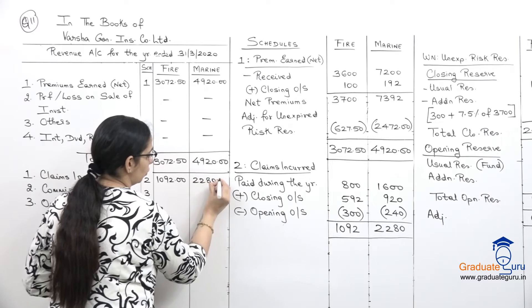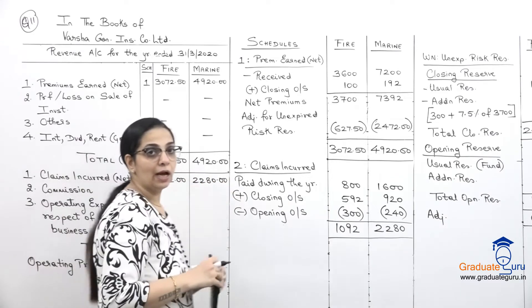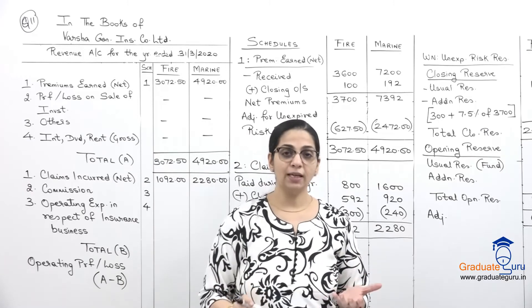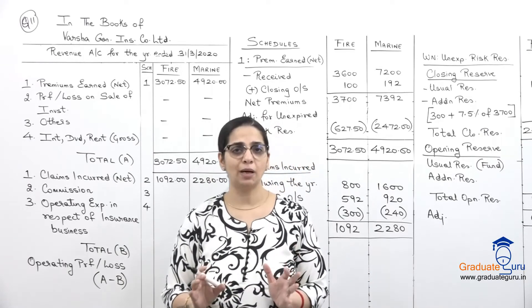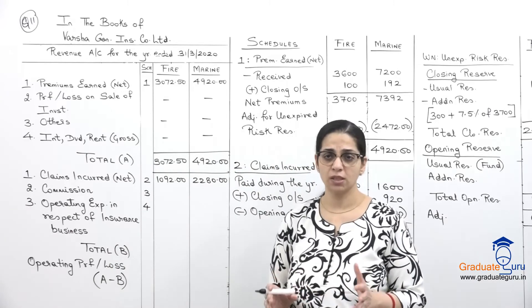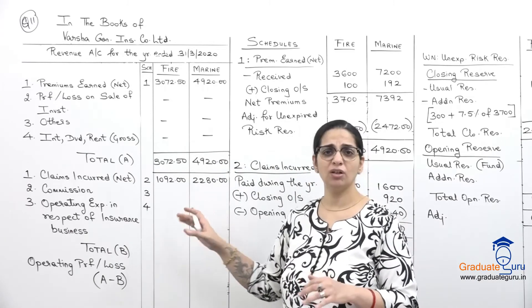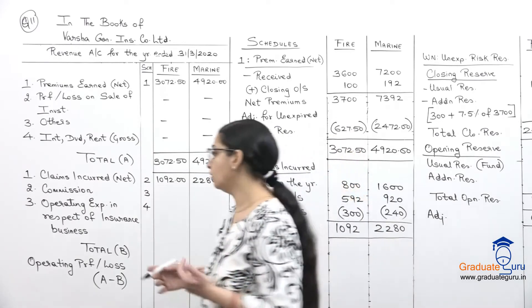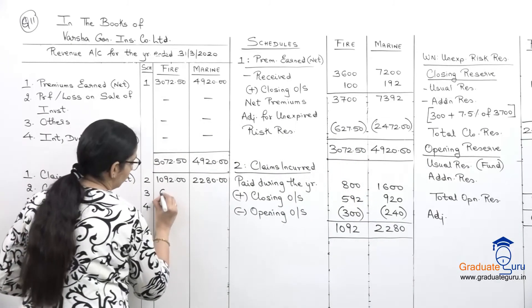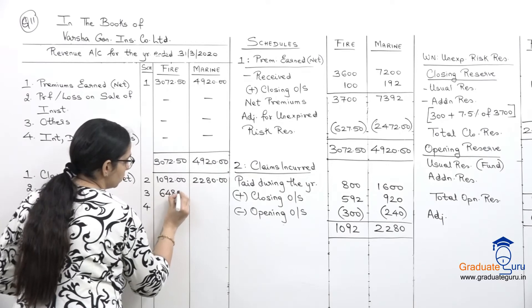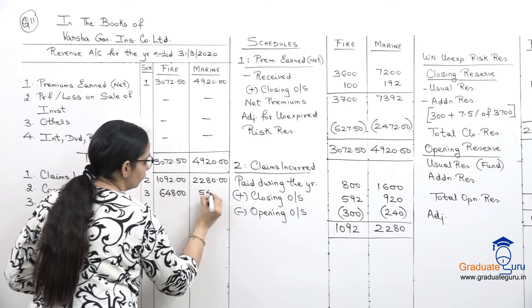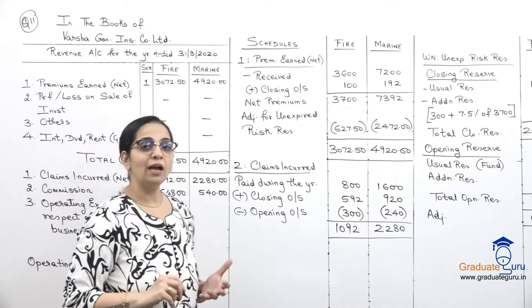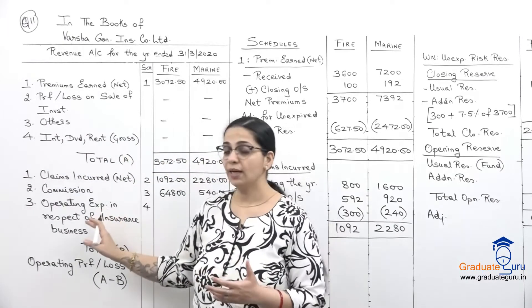Now we have to make our schedule for commission. For commission they have directly given us the amount for fire and marine, no adjustments. So I will directly write the amount here, no need to make a separate schedule. So 648 and 540.